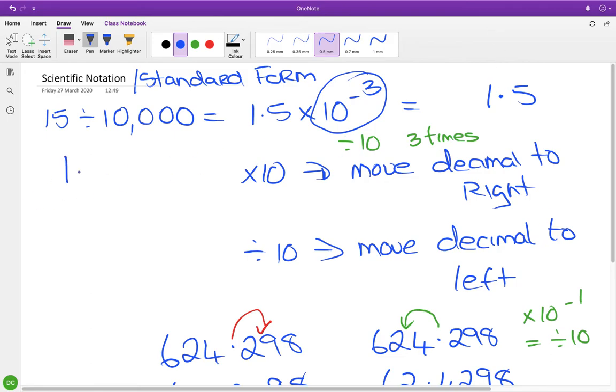Let me write this out. Starting with 1.5, divide by 10 once: the decimal point goes here, giving 0.15. Divide by 10 again: 0.015. One more time, divide by 10 again: you get 0.0015. That is your scientific notation converted to a regular decimal.